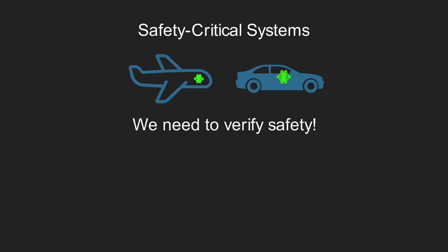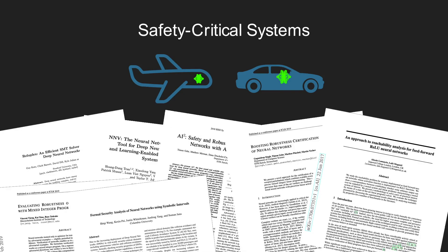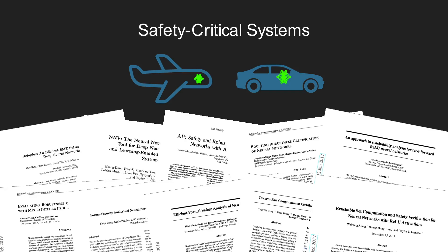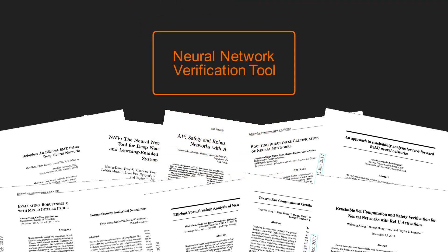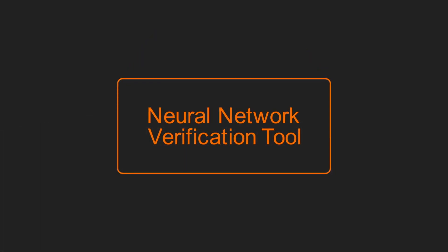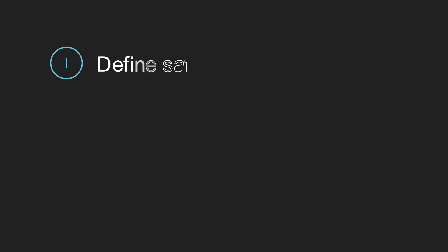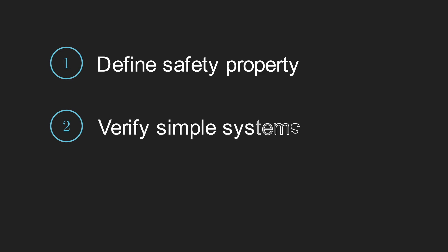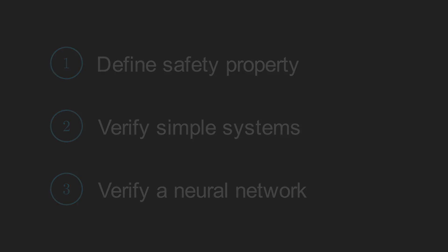The good news is there's been lots of research on this over the past four to five years, which has resulted in the development of neural network verification tools. I will spend the rest of this video going through a simple example to explain what neural network verification is and why it's even a hard problem in the first place. We will start by setting up a simple scenario and selecting a safety property to verify. We will then verify some simple systems before finally moving on to verify a neural network. Let's get started.